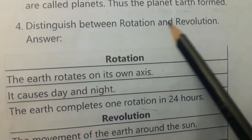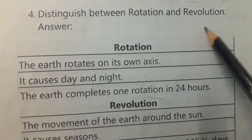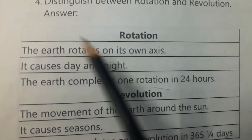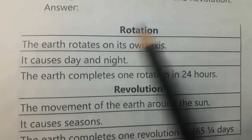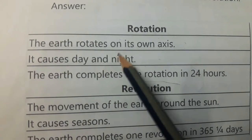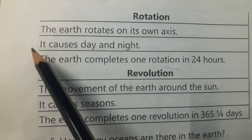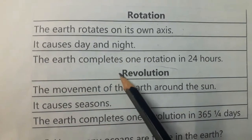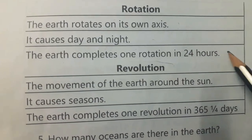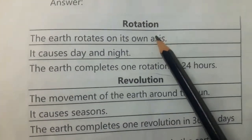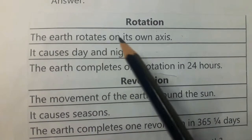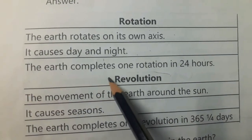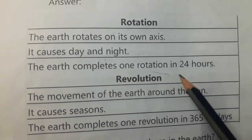Distinguish between rotation and revolution. Rotation: The Earth rotates on its own axis. It causes day and night. The Earth completes one rotation in 24 hours.